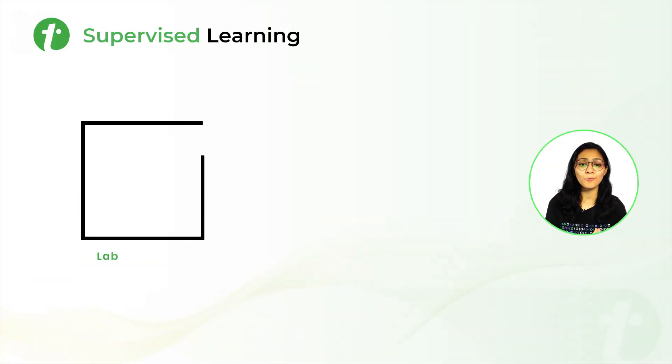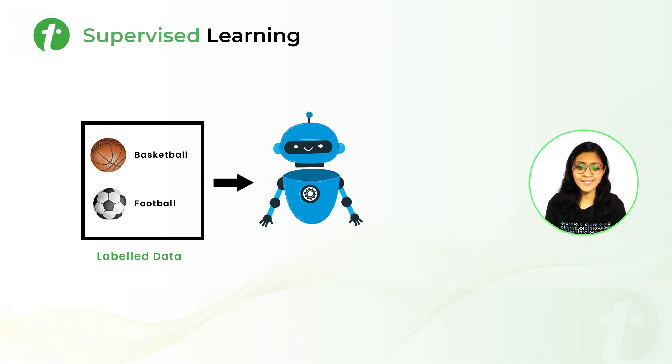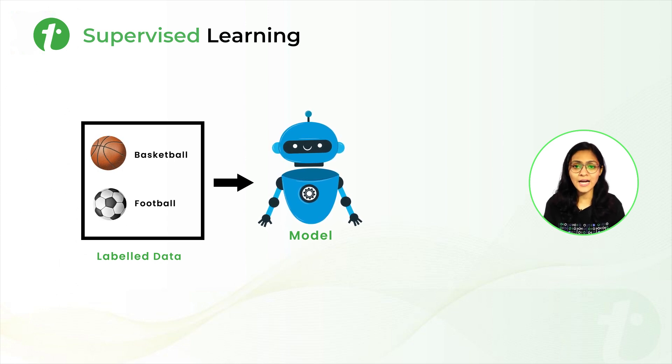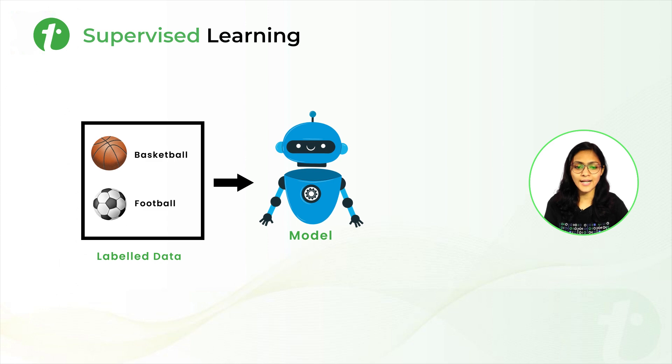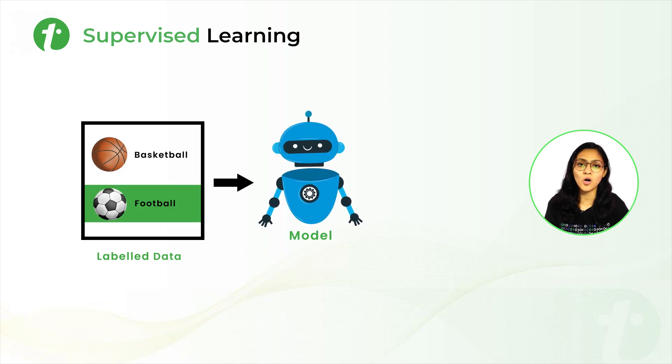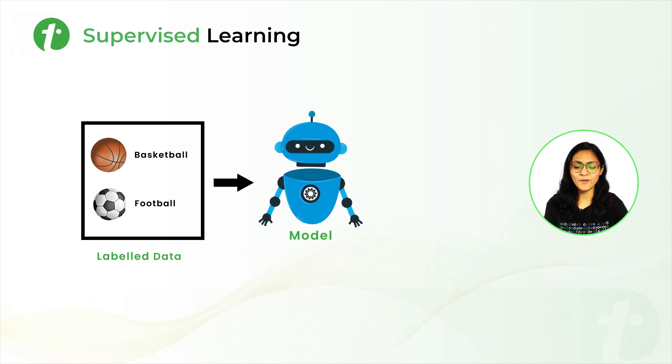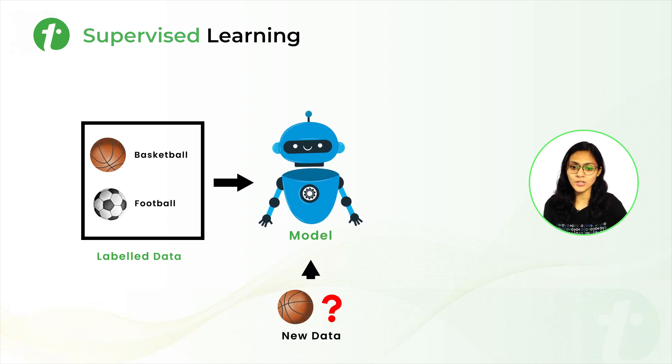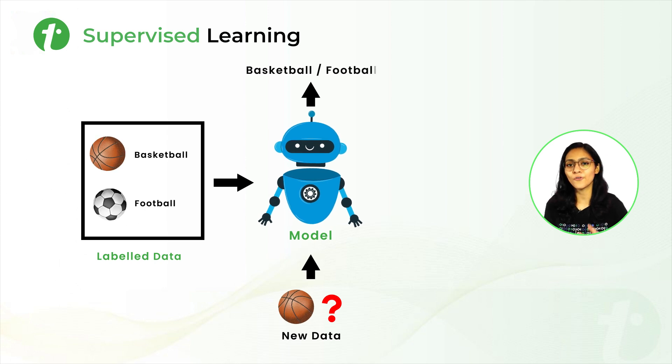Let's understand the concept of supervised learning with a simple example. Let's say this little cute guy is our model and we are providing labeled data to the model. That means we are already telling the model that this kind of ball is basketball and this kind of ball is football. So after training, when we provide a new ball to the model, it will predict whether it is a basketball or football.